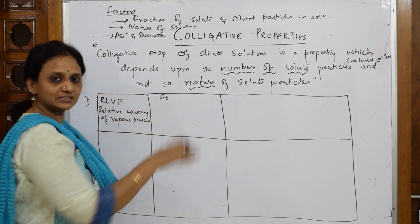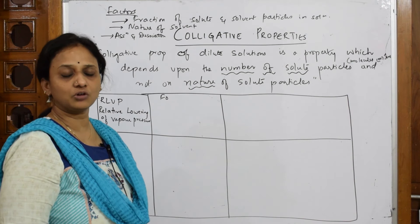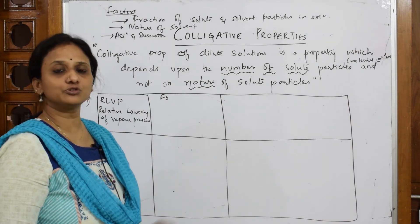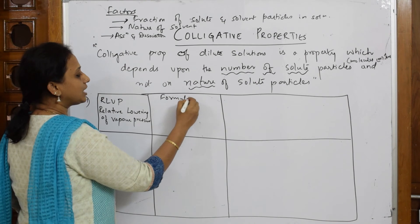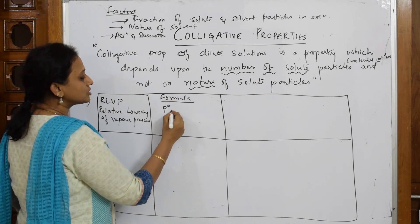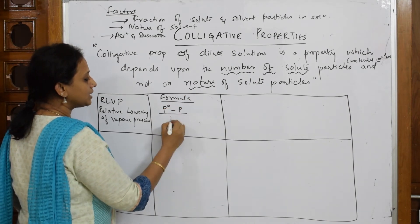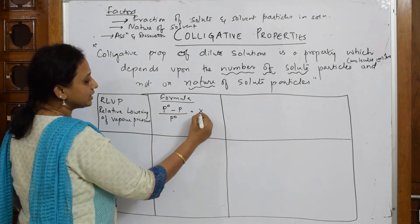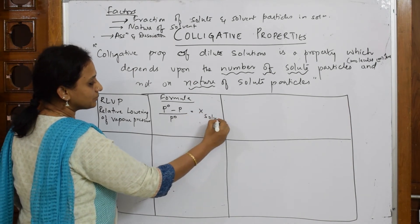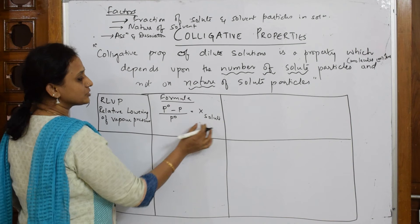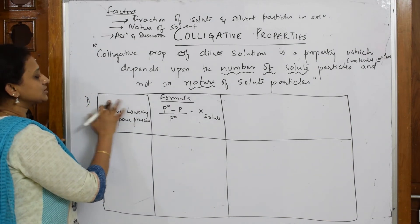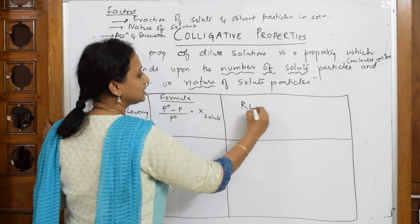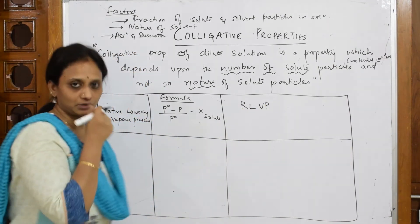So general formula for RLVP is P0 minus P by P0 equals X of solute. This is what I am trying to explain: number of solute particles. So generally in the exam, if they ask you or if you have to learn, RLVP is a general way of calling this.